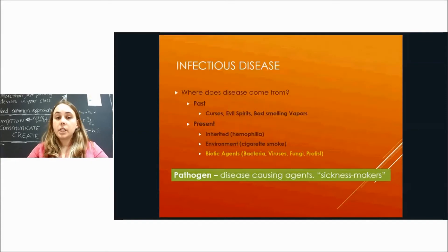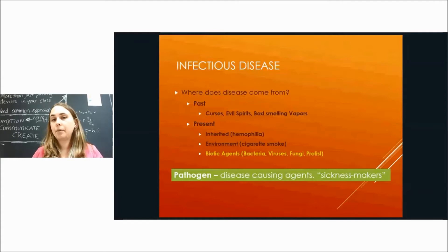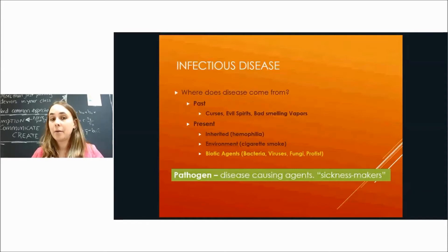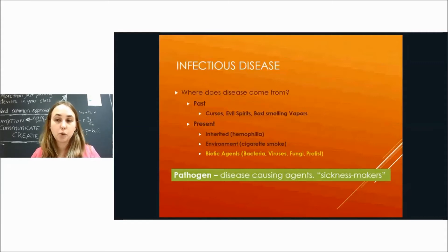Where do infectious diseases come from? In the past it was thought that infectious disease came from curses, evil spirits, or bad-smelling vapors. Now we know there are a few different ways to get an infectious disease: it can be inherited through genetics from your parents, caused by environmental factors like smoking cigarettes, or caused by biotic or living agents like bacteria, viruses, fungus, or protists. Anything that causes a disease is referred to as a pathogen — a disease-causing agent or sickness maker.